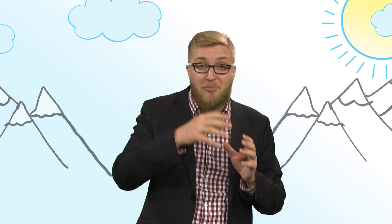We can trace the history of satellite remote sensing to the Corona project, an American spy program aimed at obtaining images of enemy territory during the Cold War. The satellites used film that had to be ejected from space and then recovered with planes dragging huge butterfly nets.